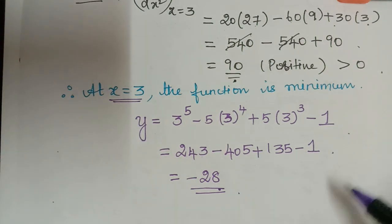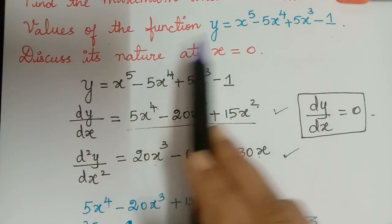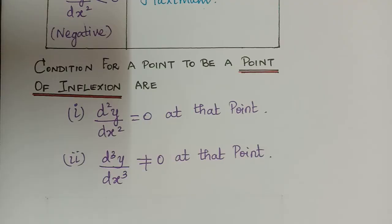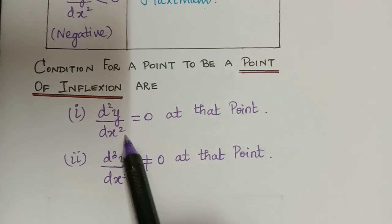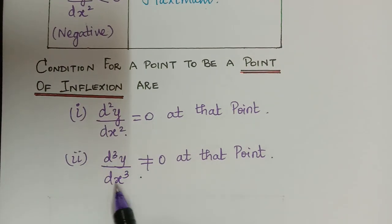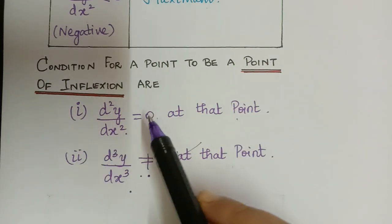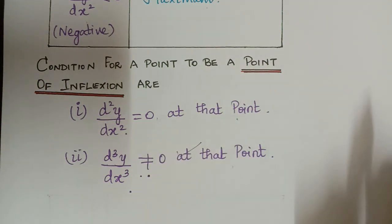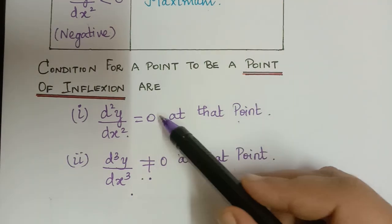Now we discuss the nature of the function at x = 0, as asked in the question. To do this we need to know what a point of inflection is. The conditions for a point to be a point of inflection are: first, d²y/dx² at that point must equal 0; and second, d³y/dx³ at that point must not equal 0. We check whether x = 0 satisfies both these conditions.